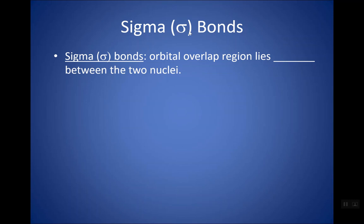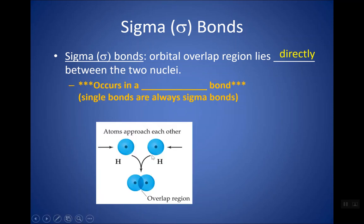A sigma bond, given by this Greek symbol, is when the electrons in the bond lie directly between the two nuclei. That's essentially what you're usually thinking of when a bond happens. If we think of two H's bonding together, they each have an unpaired electron and pull those two electrons into the middle to share them as a bond. That shared pair is directly between the two nuclei, which helps shield the two nuclei from each other, allows the atoms to get a little closer together, and there's an attraction between the electrons and the nuclei. This is a sigma bond.